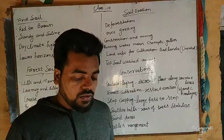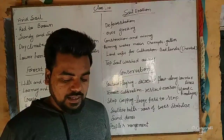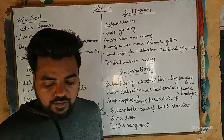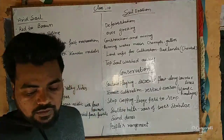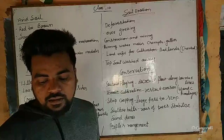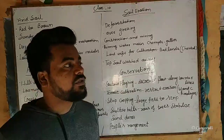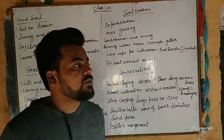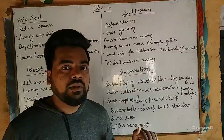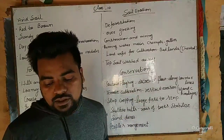Wind blows loose soil off flat or sloping land. This is known as wind erosion. The top layer of soil is washed or blown away to the other side.